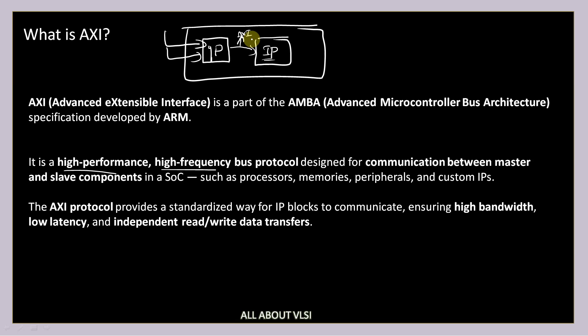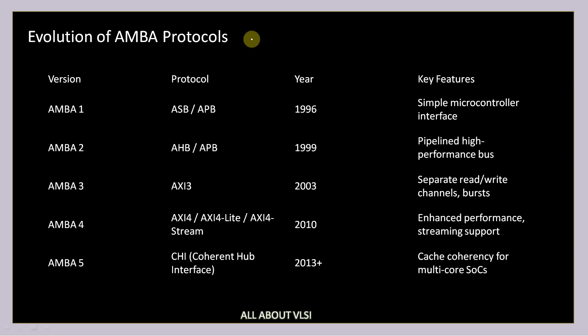AXI protocol provides a standard way for IP blocks to communicate, ensuring high bandwidth, low latency, and independent read or write transfers. Let us see the evolution of AMBA protocols. AMBA 1 had ASB and APB in 1996 with a simple microcontroller interface. AMBA 2 brought AHB and APB in 1999 as a pipelined, high performance bus.